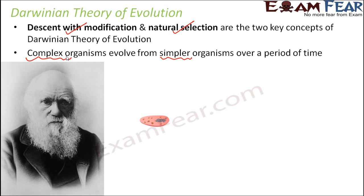Gradually over time, these single cells got united in a somewhat symbiotic union where all cells benefited from each other. In that kind of association, they united and multicellular organisms were gradually formed. Multicellular organisms have multiple cells, each with all their organelles. Cell structure also varies — prokaryotes were simpler organisms without distinct organelles, while eukaryotes are more complex and well organized. So prokaryotes came before eukaryotes, which gradually developed over time.